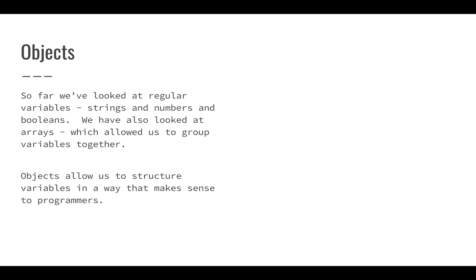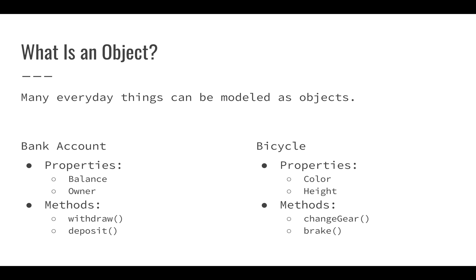Objects allow us to provide some structure and operations that we can use within our programs or within our Apps Script and functions. Objects are basically code representations that have properties and methods. Any kind of object is just some everyday thing — you can think about a bank account, a bicycle, or a car. Pretty much anything in the real world can be modeled as an object, and we like to break things down into properties and methods.